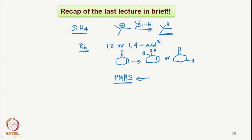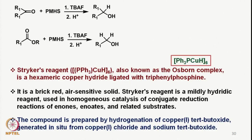If you see the recent literature, many people prefer to use PMHS as a reducing agent rather than triethylsilane or other reducing agents of similar type. Now we see how these reactions occur. For example, if we take a carbonyl group, then PMHS in the presence of TBAF — tetrabutylammonium fluoride — can carry out the reduction.